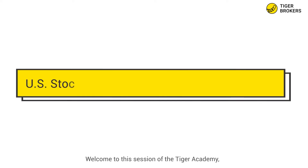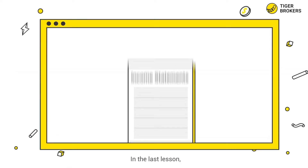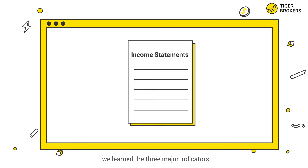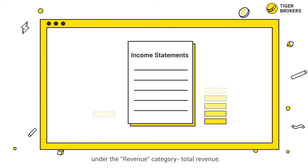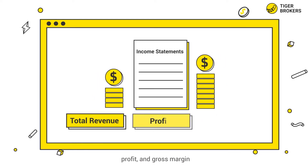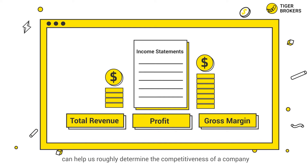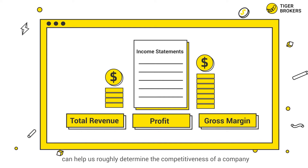Hi everyone, welcome to this session of the Tiger Academy, U.S. Stock Financial Statements for Beginners. In the last lesson, we learned the three major indicators under the revenue category: total revenue, profit, and gross margin. These three indicators can help us roughly determine the competitiveness of a company.